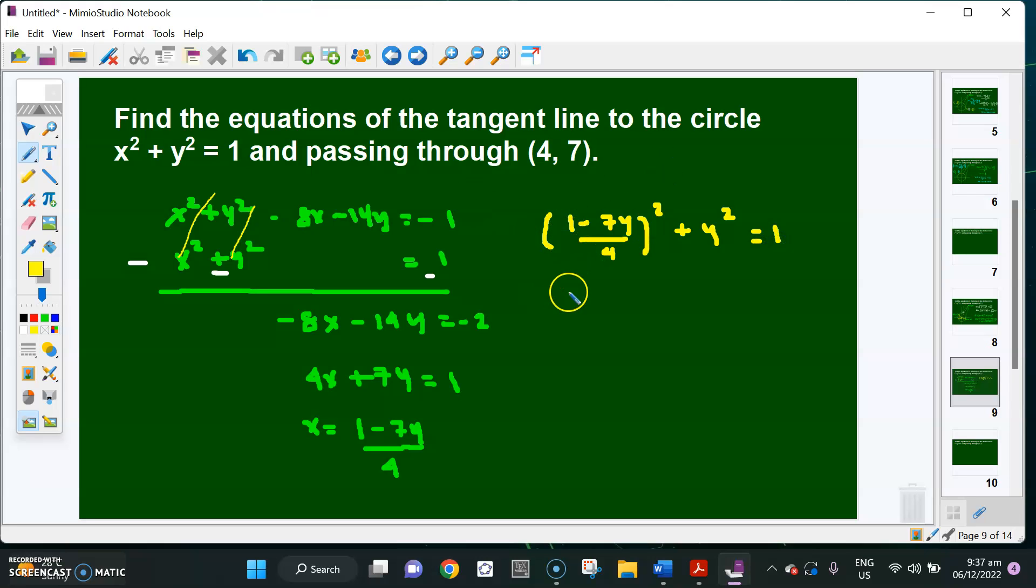Expand this. That will be (1 minus 14y plus 49y squared) over 16 plus y squared equals 1. Combining like terms, I'm going to have 1 minus 14y plus 49y squared plus 16y squared equals 16. So 65y squared minus 14y minus 15 equals 0.